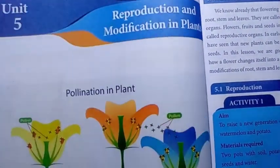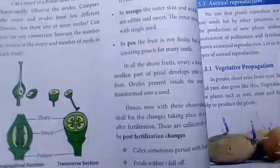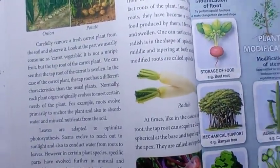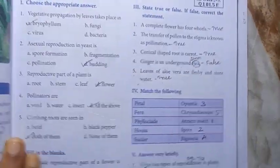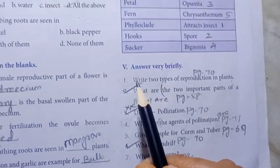Next, Unit 5, Reproduction and Modification. This is page number 71. Look full. Answer very briefly.